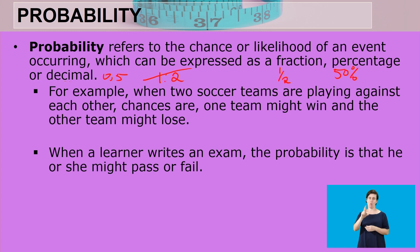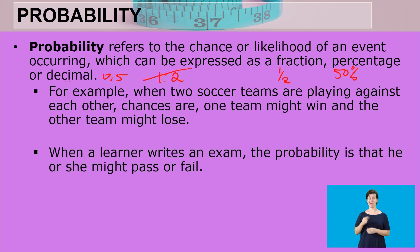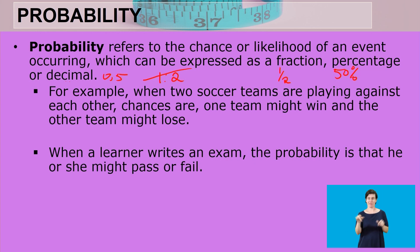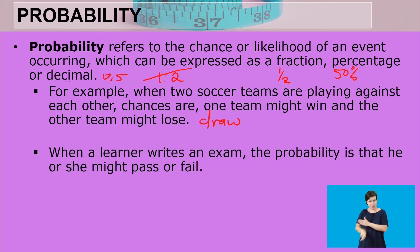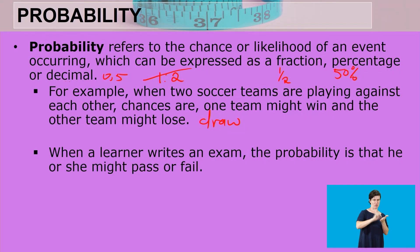For example, when two soccer teams are playing against each other, chances are one team might win, the other team might lose, or both teams might draw. So there are actually three options when teams are playing: one wins and the other loses, the other loses and the other wins, or both teams draw where neither team has won or lost.